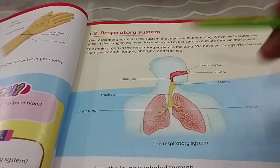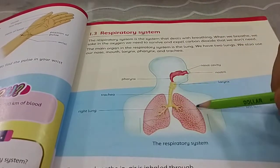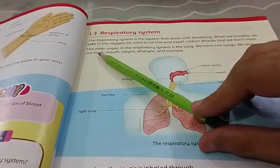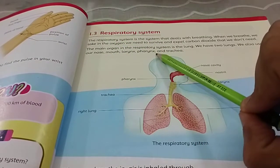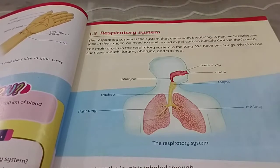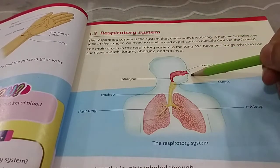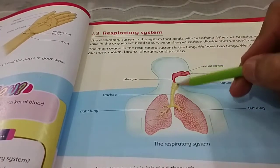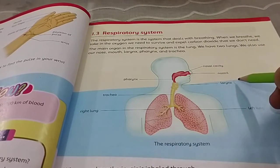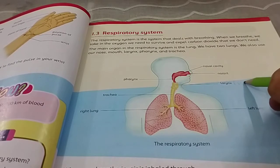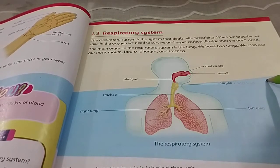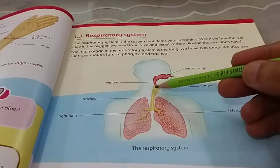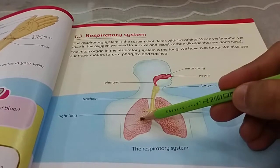We have two lungs — the left lung and the right lung. We also use our nose, mouth, larynx, pharynx, and trachea. We breathe in through the nose or mouth; it comes to the pipe called the pharynx, then to the larynx. The larynx is also our voice box. From there it comes to the trachea, which connects both lungs.